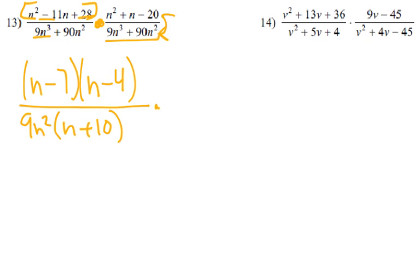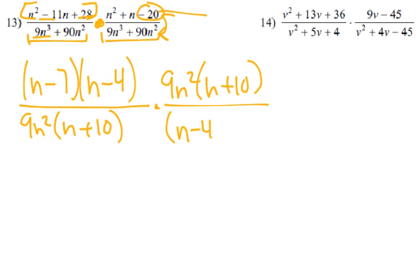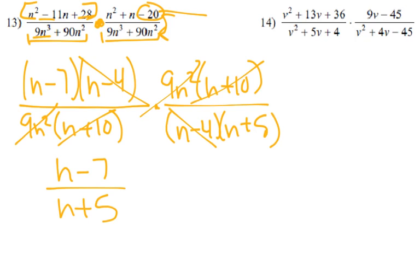And then we multiply that and flip. So this part, which is actually the same as this part, would be reduced the same, right? 9n² times n plus 10. And then this top, factors of negative 20 that add up to positive 1, would be n minus 4 times n plus 5. So those cancel out, because 1 on top, 1 on the bottom. Those cancel out. The n minus 4s cancel, leaving us with n minus 7 on top, n plus 5 on the bottom.